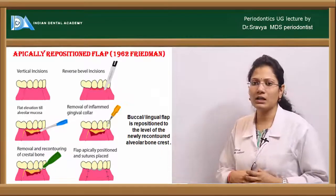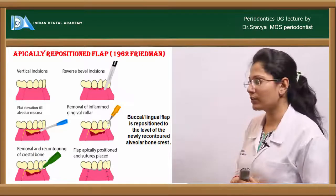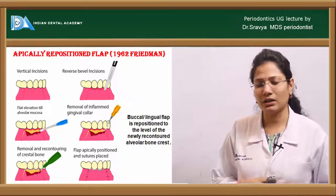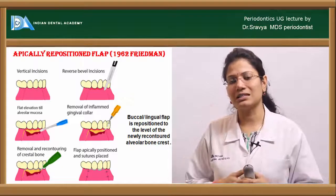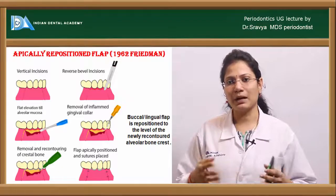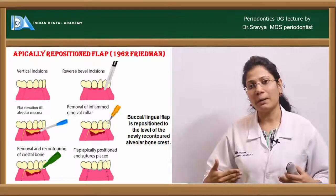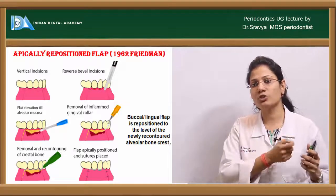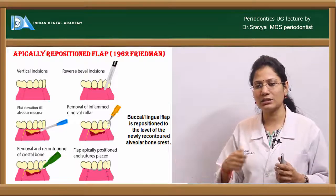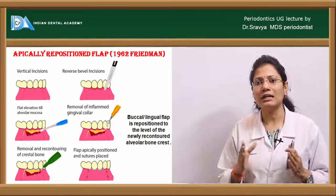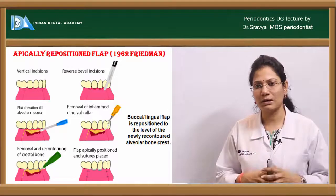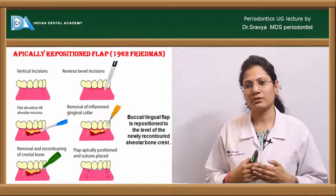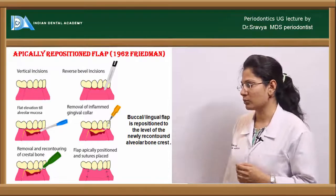The apically repositioned flap was given by Fridman in 1962. You give a crevicular incision with two vertical releasing incisions, reflect the flap, debride the root surface, and then apically shift or displace the flap. The vertical releasing incisions are sutured first, followed by the interdental incisions to stabilize the flap in its apical position.